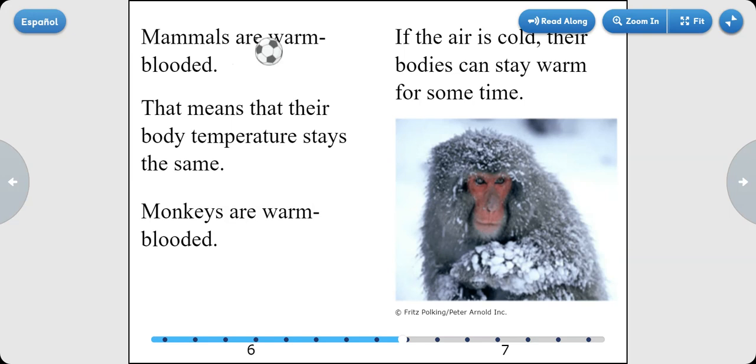Mammals are warm-blooded. That means that their body temperature stays the same. Monkeys are warm-blooded. If the air is cold, their bodies can stay warm for some time.